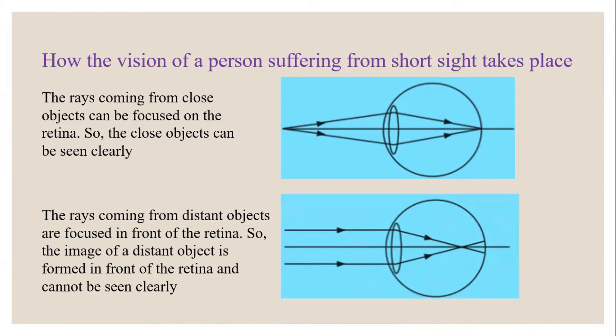One reason for this defect is the eyeball being too long, which is why light rays are focused in front of the retina. Another reason is that to observe far away objects we need to decrease the curvature of the eye lens, but this person cannot decrease the curvature of the eye lens.